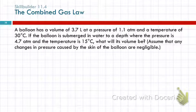Let's do another one. A balloon has a volume of 3.7 liters at a pressure of 1.1 atmospheres and a temperature of 30 degrees Celsius. If the balloon is submerged in water to a depth where the pressure is 4.7 atmospheres, and the temperature is 15 degrees Celsius, what will its volume be? Assume that any changes in pressure caused by the skin of the balloon are negligible.